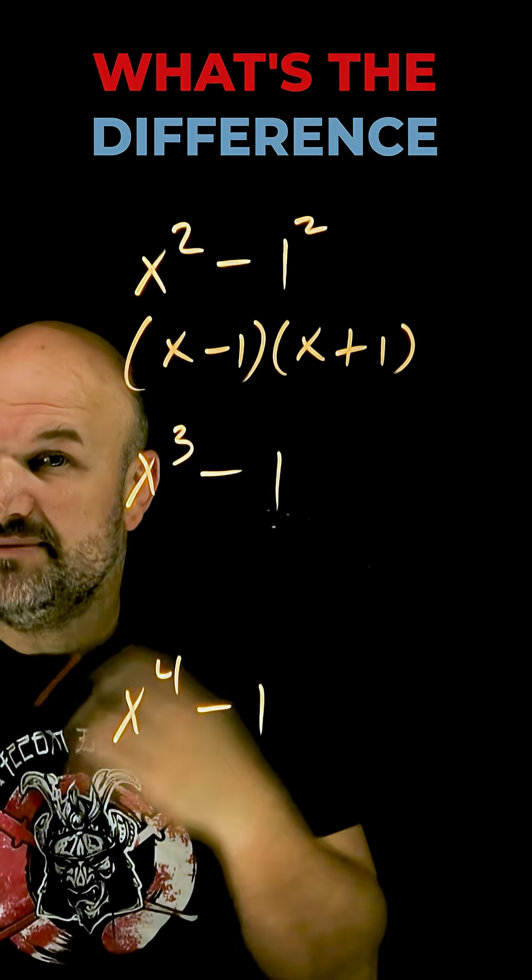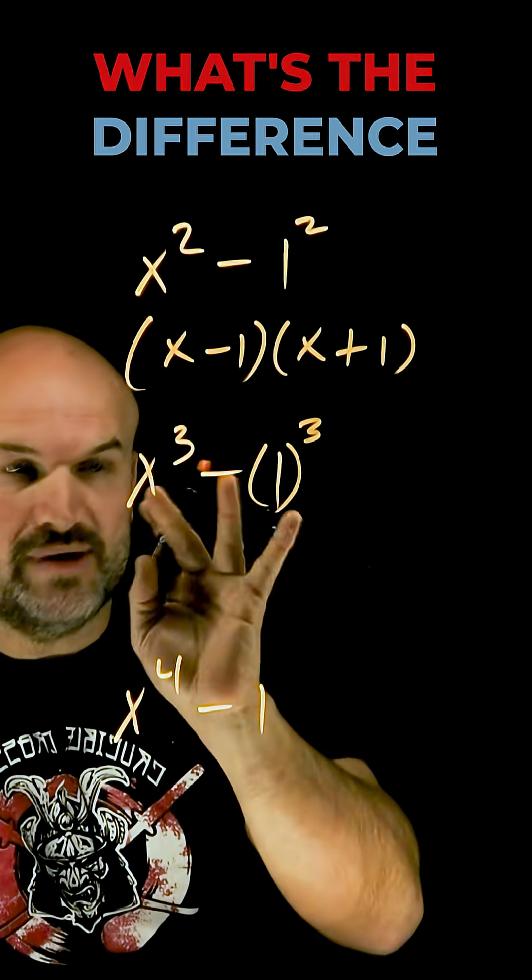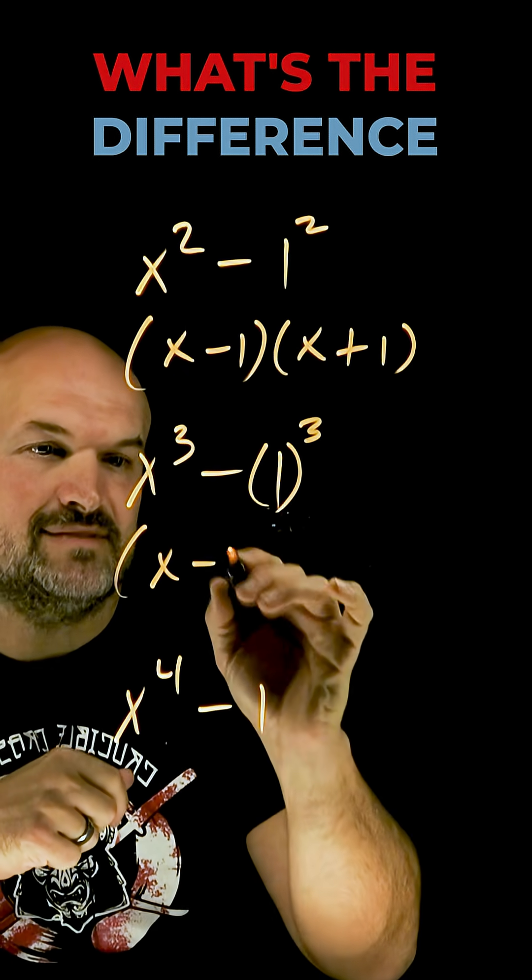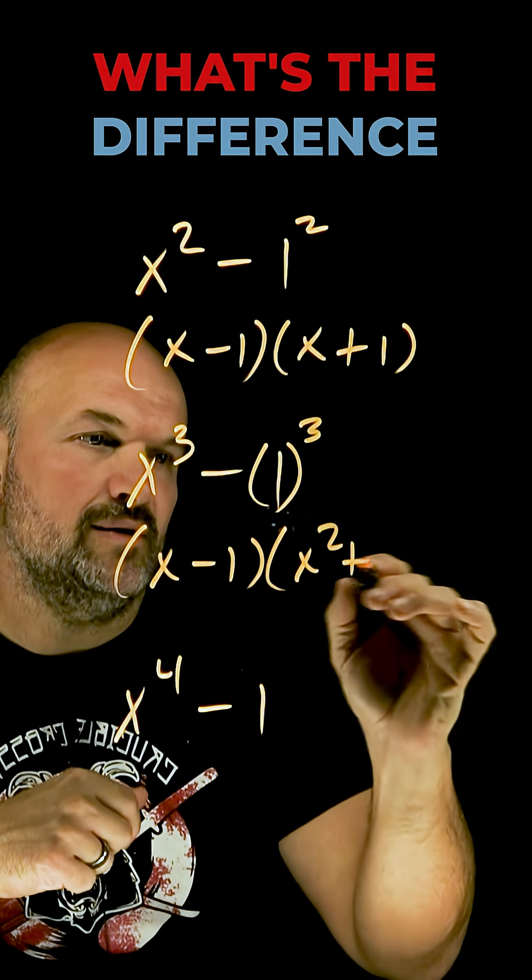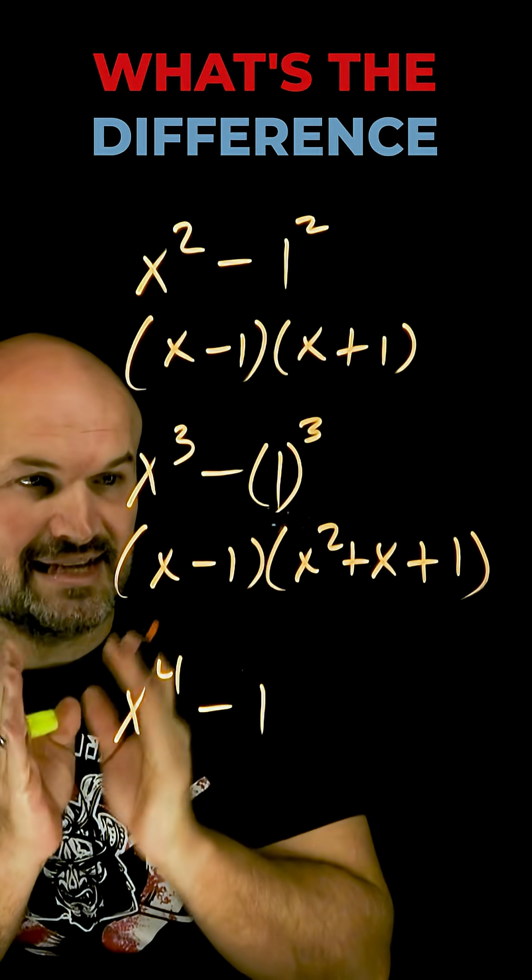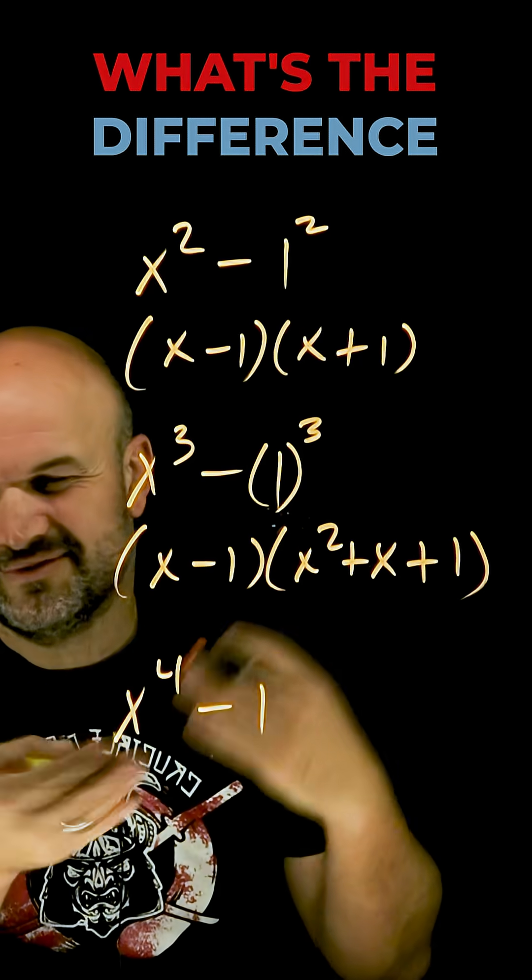The next one can be understood as a difference of two cubes because you can always rewrite one as one cubed. When you have the difference of two cubes, you need to remember the formula. In this case, it's going to be x minus 1 times x squared plus x plus 1. The formula is a cubed minus b cubed equals a minus b times a squared plus ab plus b squared.